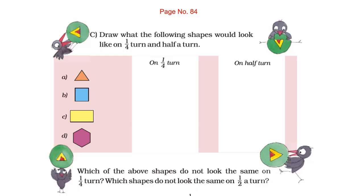This is a problem on page number 84 from the chapter 'Does it look the same?' We have to draw what the following shapes would look like on a one-fourth turn and a halfway turn. The shapes given are Triangle, Square, Rectangle, and Hexagon.